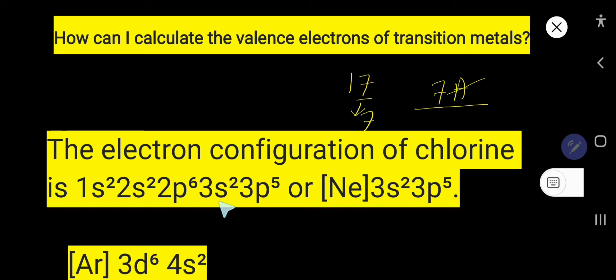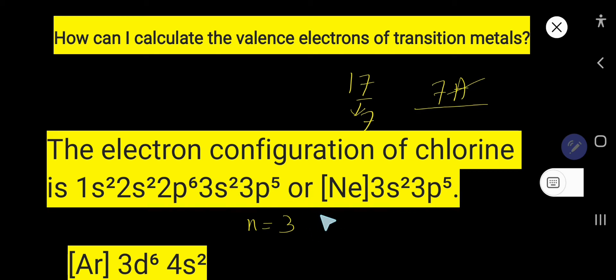In electron configuration, valence electrons are in the outermost shell — that is, the shell with the highest principal quantum number. For chlorine, that is n=3, giving 3s² and 3p⁵. The third energy level is the valence shell, and 2+5 gives seven valence electrons for chlorine.